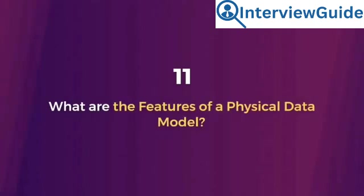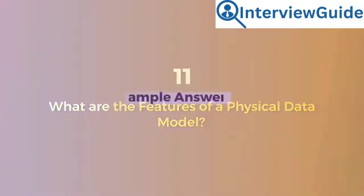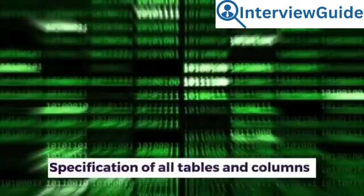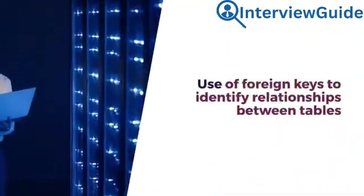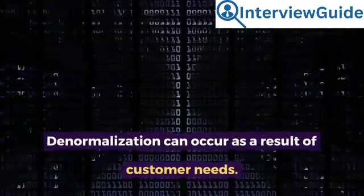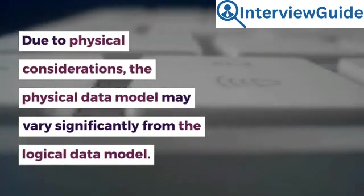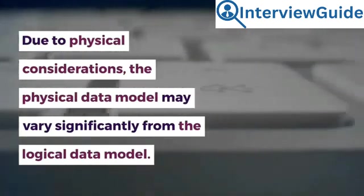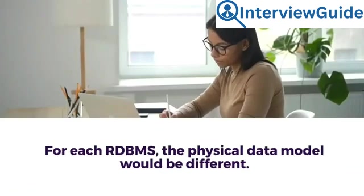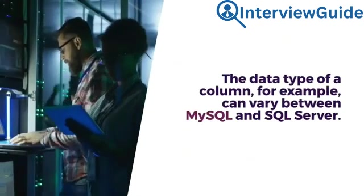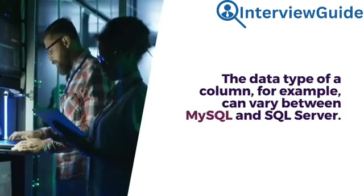Question 11: What are the features of a physical data model? Sample answer: The features of a physical data model are specification of all tables and columns, use of foreign keys to identify relationships between tables, and denormalization can occur as a result of customer needs. Due to physical considerations, the physical data model may vary significantly from the logical data model. For each RDBMS, the physical data model would be different — for example, the data type of a column can vary between MySQL and SQL Server.